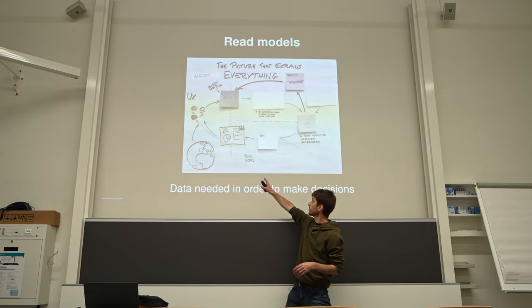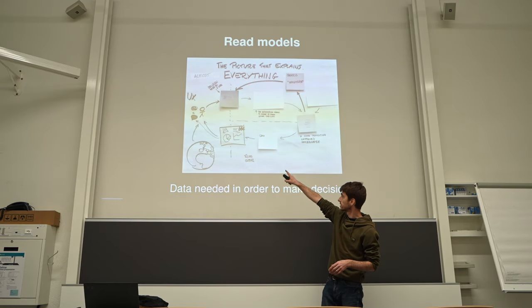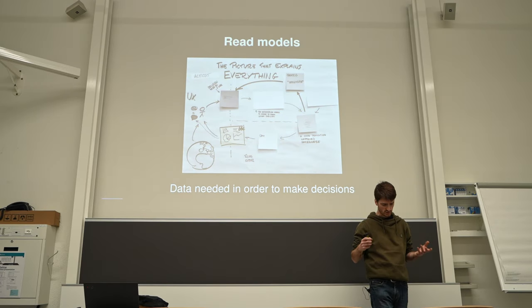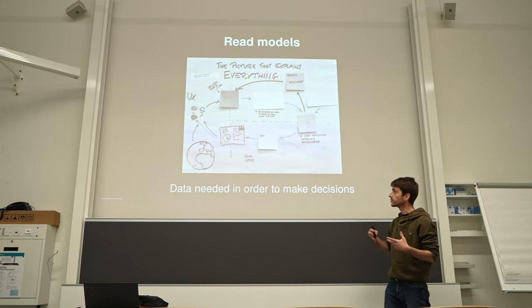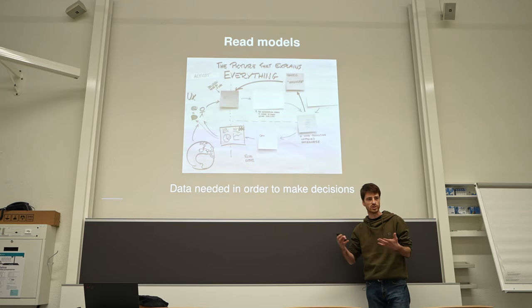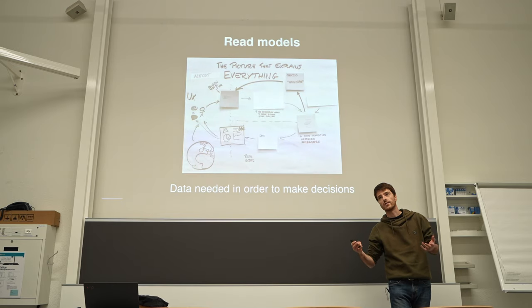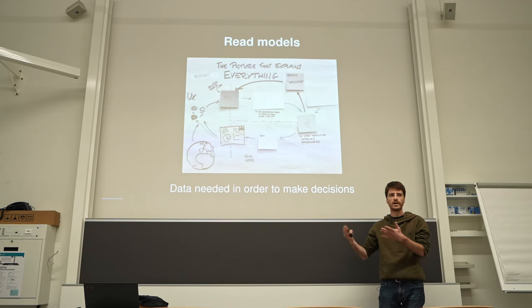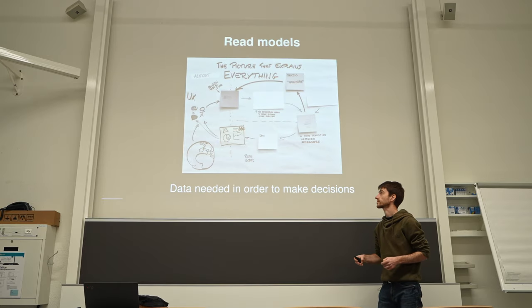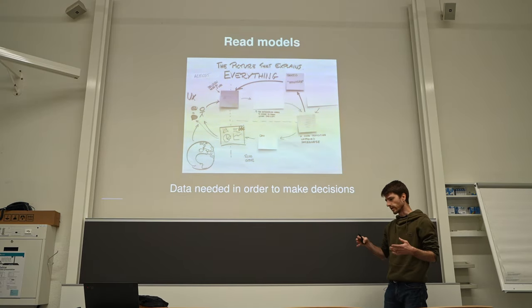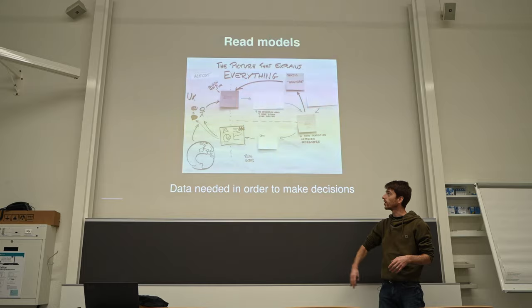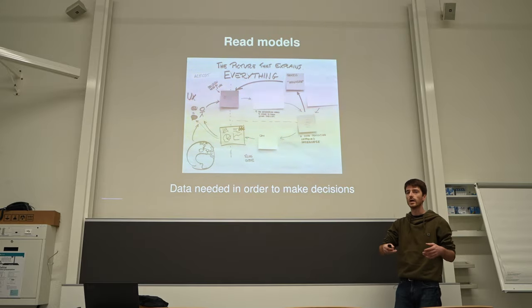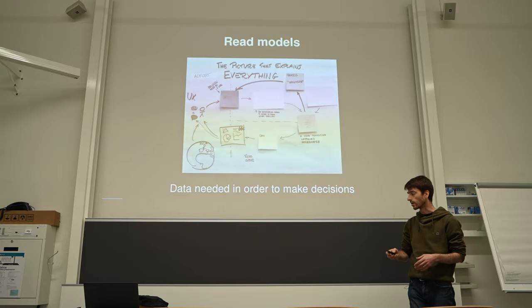The other part — it's down here, the color is not so visible — are the so-called read models. It's basically all those data which are needed by the user to take decisions. So you know that you have 200 bucks in your bank account, so you'll try to withdraw 100 and not 250, because you know that will probably fail. Or you saw that you already have an item in your cart, so you're not trying to add that again.